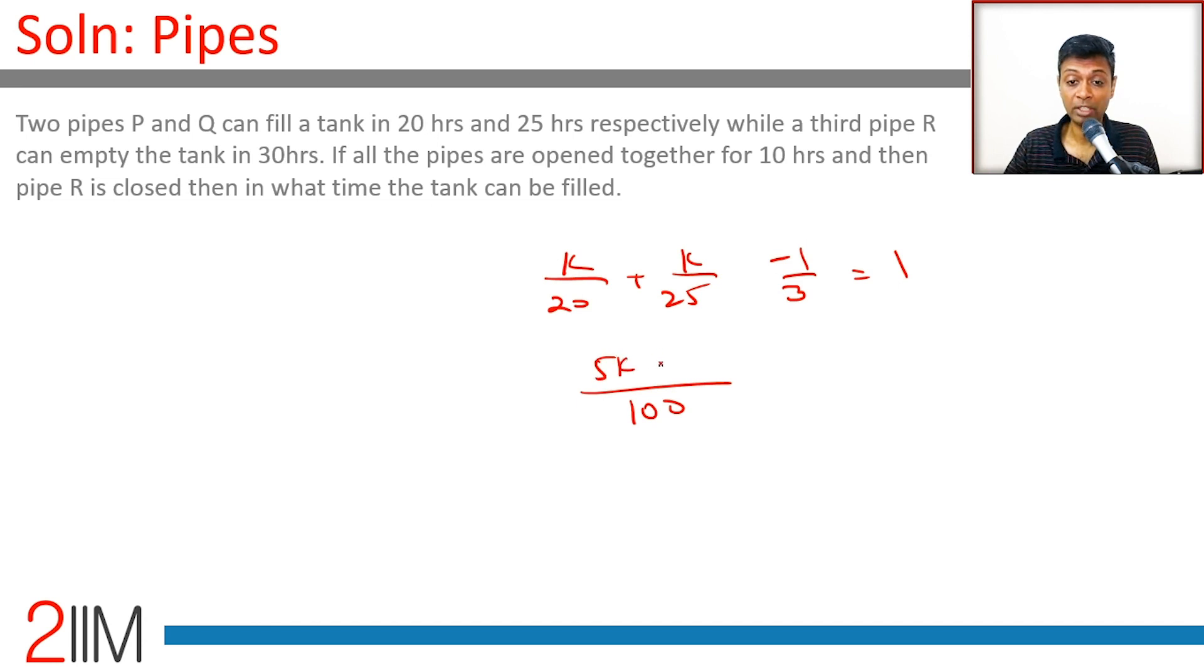5k/100 + 4k/100 = 4/3. So 9k/100 = 4/3. Therefore k = 400/27, which is the total time taken for pipes P and Q.